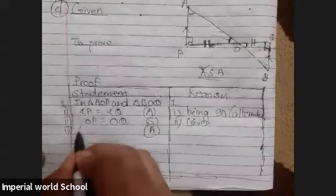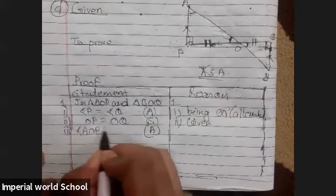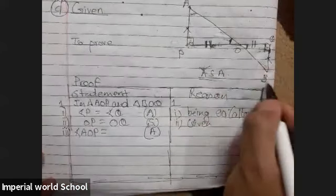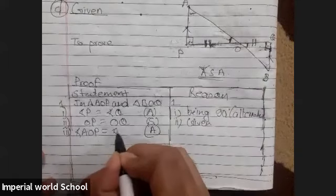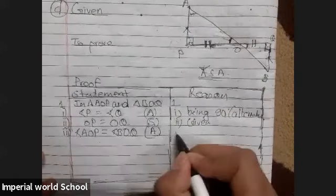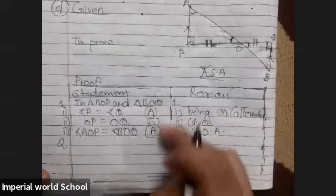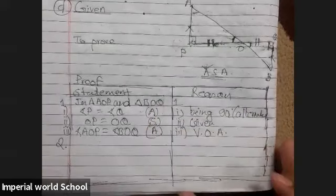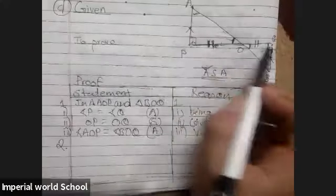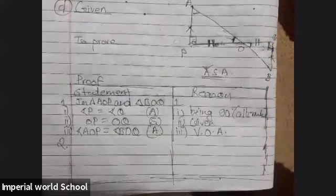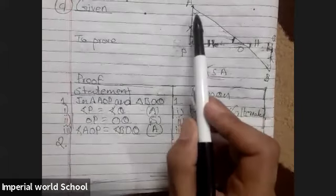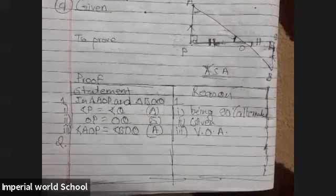And the last one is AOP. Angle AOP equals to angle BOQ. So, why they are equal? Number 3 is vertically opposite angle BOQ. So, instead of angle P and Q, can we write angle A and angle B? No, you write this only here. Because if you do like this, then there might be one problem. It looks like that.